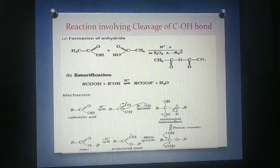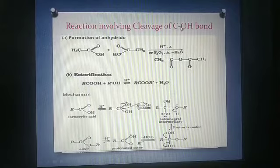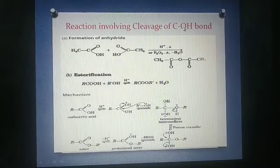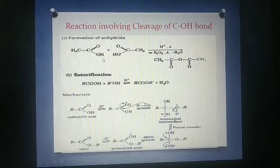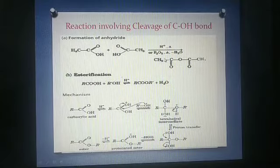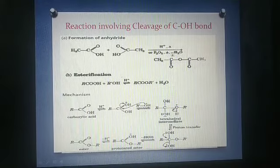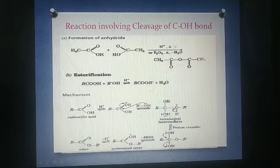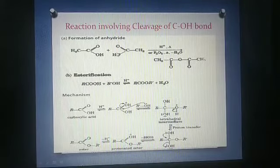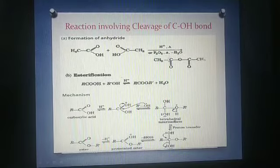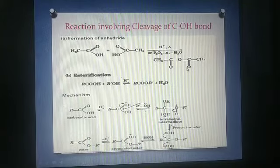Reactions involving cleavage of COH bond. Formation of anhydride. Two molecules of acids in presence of H plus and P2O5 and in presence of heat. One water molecule is released so that it forms anhydride. From here we can see that one water molecule is released. The product will be CH3CO double bond O OCOCH3.